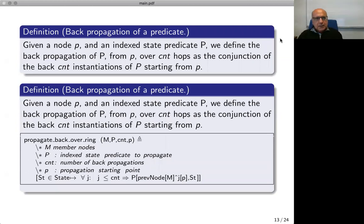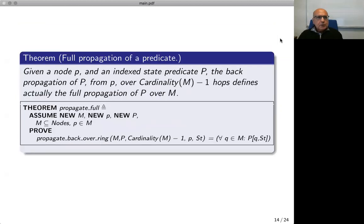The last result that we will need is the back propagation of a predicate. The basic idea is that given a predicate, we want to know how many times we should propagate this predicate along the ring — and we propagate it through the prev node function. This result is intuitively trivial; however, we had to state it explicitly. The result is that if we propagate this predicate along the ring the number of times equal to the cardinality of the nodes of the ring, then we reach the full propagation of the predicate.